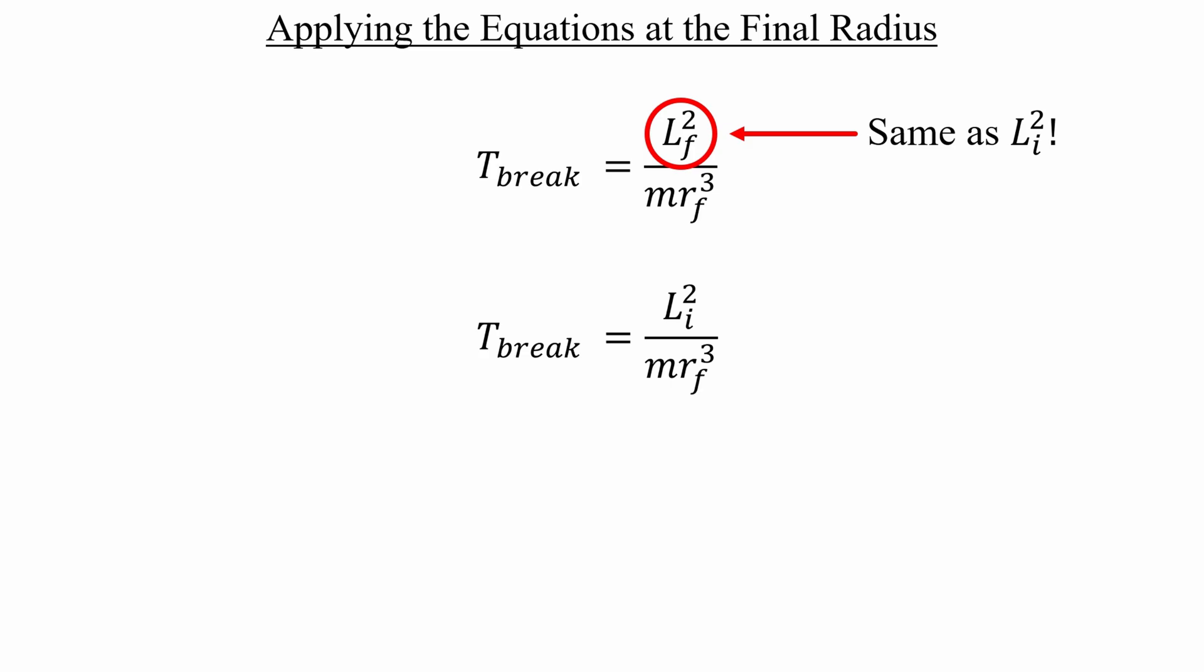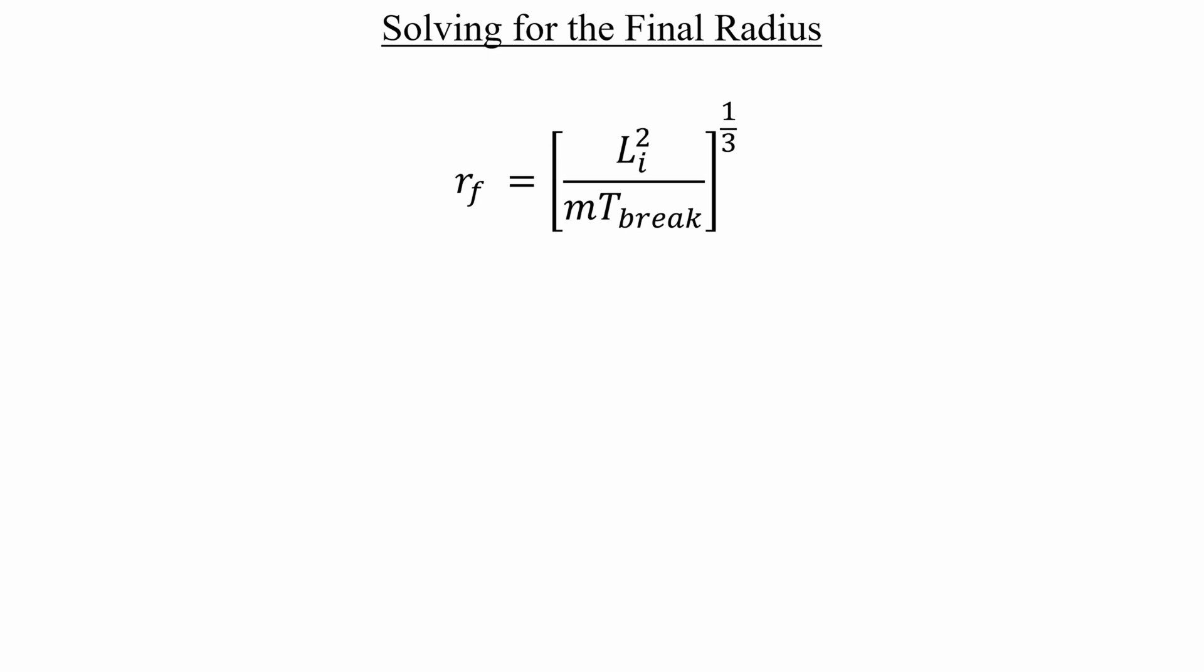All that's left is to switch the positions of the tension and the final radius variables. Once we do that, we can raise both sides to the one-third power. Everything is now ready, and we're free to start plugging in our numbers. On my calculator, I get a final radius value of approximately 0.440 meters. And that is our final answer.